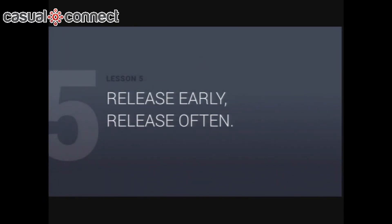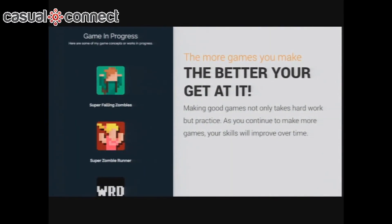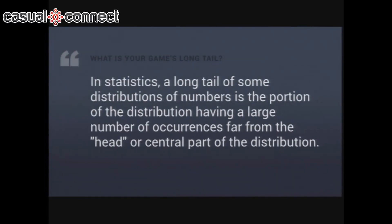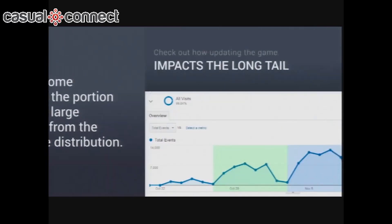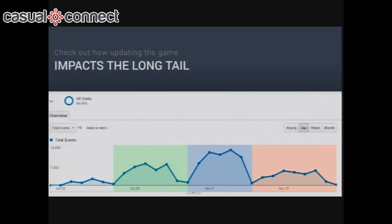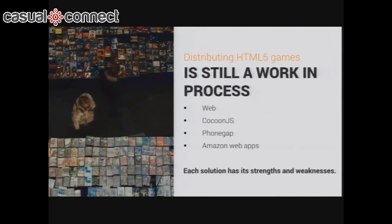The last part is about releasing early and releasing often. The real thing about making games is that it's not about making the perfect game — it's about making as many games as possible and getting good at it. It's just like any other skill: you have to build up your muscles to be a good game developer. With releasing often, you can take advantage of the long tail. When you release something, there's a huge pickup and then it drops off. Every time I do an update to my game, I get a pickup and a drop-off, continuing to improve player engagement. Distributing HTML5 games is still kind of a mess — it's all over the place and no one has a real answer yet.